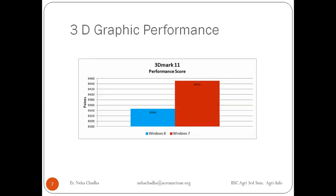Then is 3D graphic performance. As the graphics are concerned — the pixels on screen, the performance score — if you compare both, the performance of Windows 7 is 9451 and Windows 8 is 9346. These are in points. The performance of Windows 7 is better compared to Windows 8 in 3D graphics.